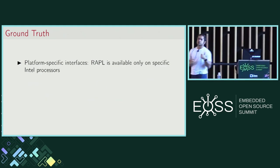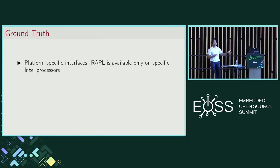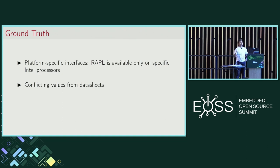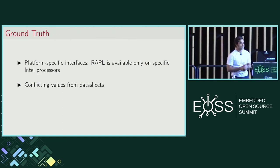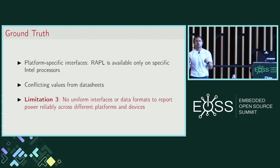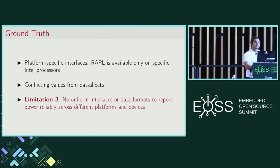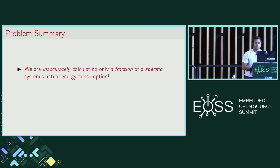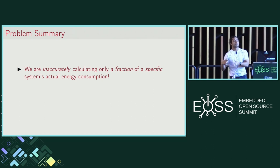Third, the interface we use to get the power value — the data sheet or RAPL — is available only on specific classes of processors. So it might often turn out that you don't even have access to this data in the first place. Sometimes data sheets have conflicting values. That brings me to the third limitation: we do not have a uniform interface or reporting mechanism to make sense of this data. To summarize all of these problems: we are inaccurately calculating only a fraction of a highly specific system's actual energy consumption.